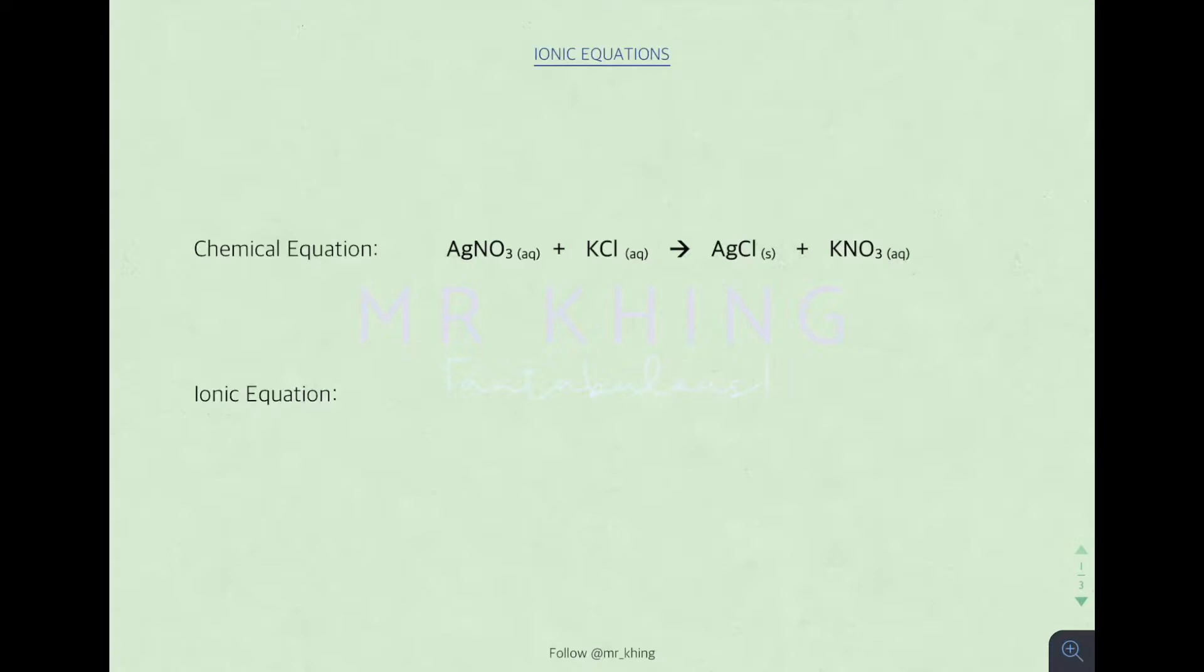Alright, now we are going to talk about ionic equations. How can we deduce the ionic equation based on the chemical equation given? In order to look for the ionic equation, first you have to look for the spectator ions. To convert chemical equation into ionic equation, we have to remove all the spectator ions. What are spectator ions? Spectator ions are ions that remain the same before and after, or ions that do not take part in the chemical reaction at all.